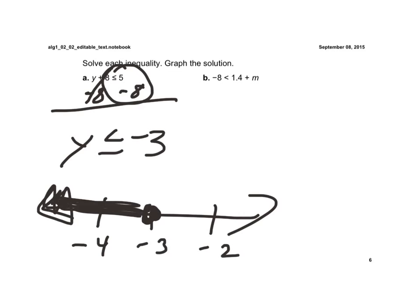This next one, I'm solving for m. The m is on the right this time, so I'm going to subtract 1.4, add a negative 1.4 to each side. When I do that, I have negative 8 and negative 1.4. I go ahead and I add, so that's a negative 9.4, because I add and keep, it's less than m.